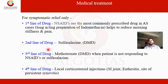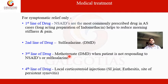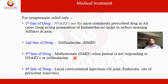The second line of drug is sulfasalazine, which comes under DMARDs. When the patient is not responding to NSAIDs, you go for DMARDs — the second line. The third line is methotrexate. The fourth line is local corticosteroid injection, prescribed by the doctor after all NSAIDs and DMARDs fail.